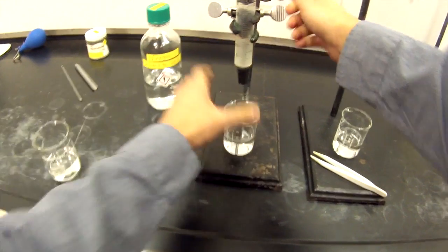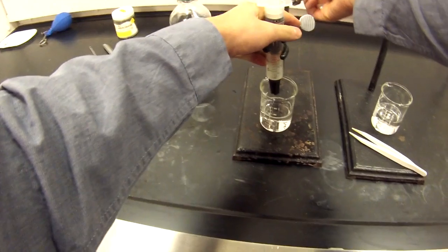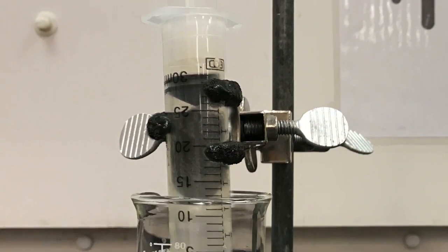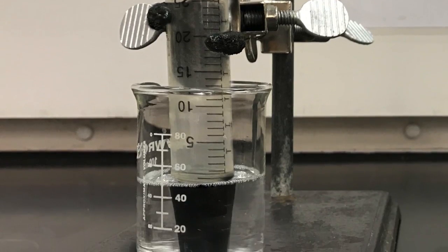And then we're going to secure that into our three-prong clamp. Then we're going to soak the tip of the syringe into our detergent solution. That should be the setup that you should expect to have once you have your syringes set.